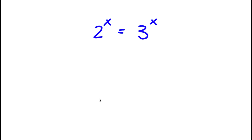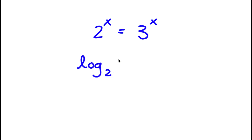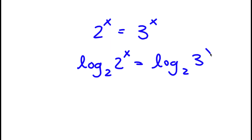Alright, so in this problem I have 2 to the power of x is equal to 3 to the power of x. The first thing I'm going to do is take the log base 2 on both sides. So I have log base 2 of 2 to the power of x is equal to log base 2 of 3 to the power of x.